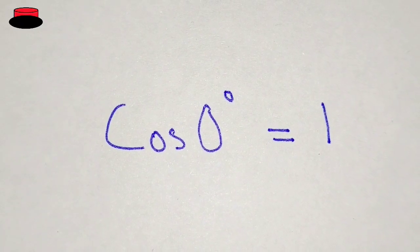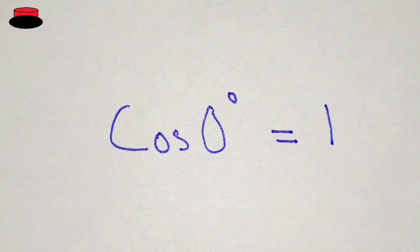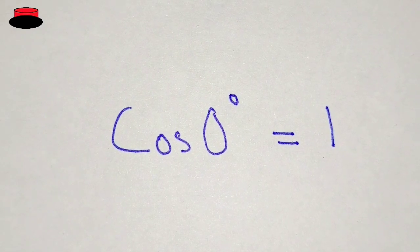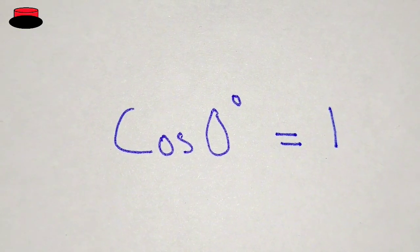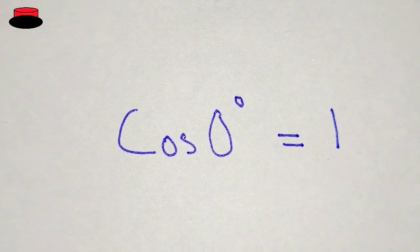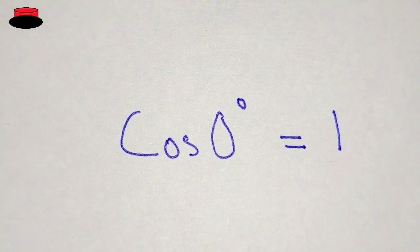Hello, welcome to this new video. In this video we are going to prove that cosine zero degrees is equal to one. We all know that cosine zero degrees equals one, but we don't know the reason behind it. Today we will prove how cosine zero degrees is equal to one.